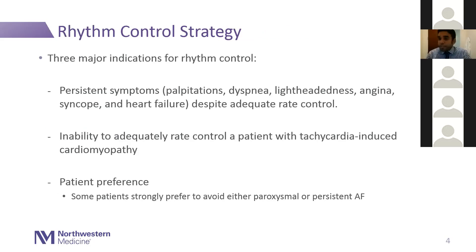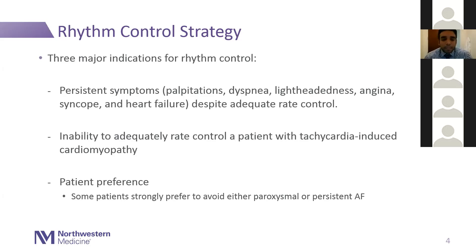Three major indications for rhythm control. First is symptoms — palpitations, dyspnea, lightheadedness, angina, syncope, heart failure — occurring despite good rate control; you should start thinking about maintaining sinus rhythm. Second indication is if you're unable to adequately control heart rate, especially with a tachycardia-induced cardiomyopathy — even if they don't have clinical symptoms of AFib but the EF has dropped and you can't rate control them. Third is patient preference: some patients have a strong preference to be in sinus rhythm instead of paroxysmal or persistent AFib.